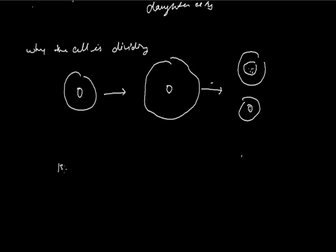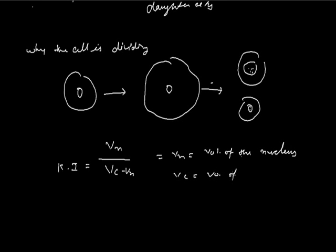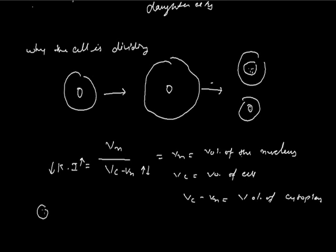We can understand this by the karyoplasmic index theory. The formula of the karyoplasmic index theory is Vn upon Vc minus Vn, where Vn equals the volume of the nucleus and Vc equals the volume of the cell. So Vc minus Vn equals the volume of the cytoplasm. When the volume of the cytoplasm increases, the karyoplasmic index will be decreased. When the volume of the cytoplasm decreases, the karyoplasmic index will be increased. So, the small cell contains more karyoplasmic index and the large cell contains less karyoplasmic index.